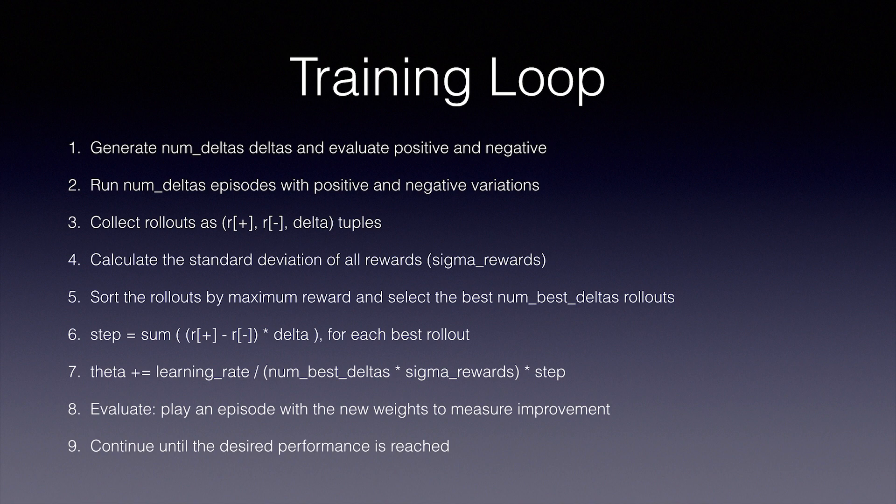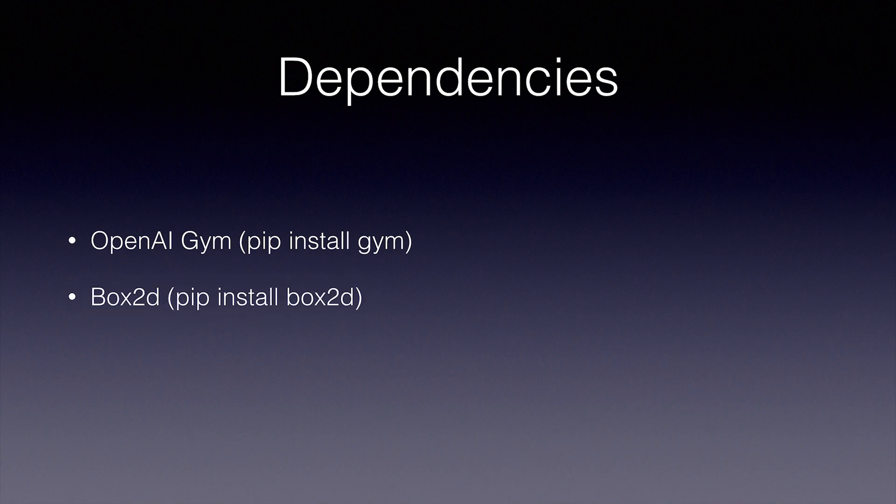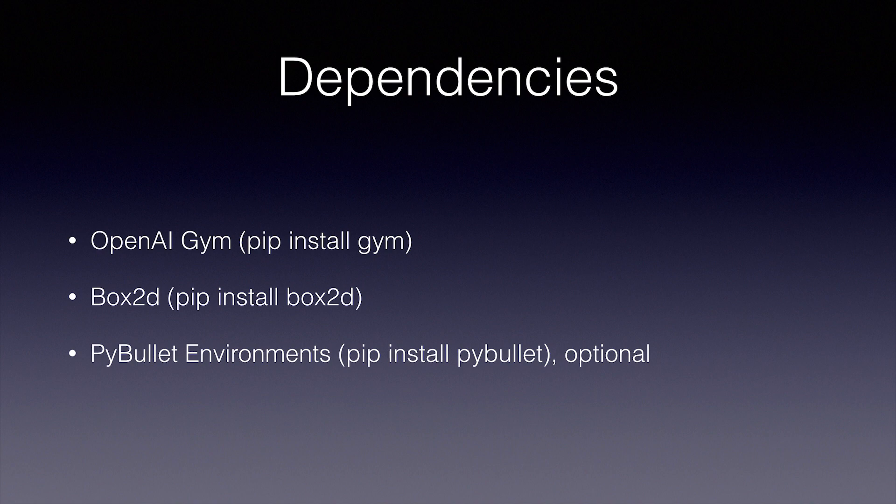You may need to install a few dependencies to get the code to work. You can use whatever dependency manager you're most comfortable with. First, you'll need OpenAI Gym. Then, to get the bipedal walker working, install Box2D. And optionally, PyBullet, which is an open source replacement for the expensive Mojoko environments.